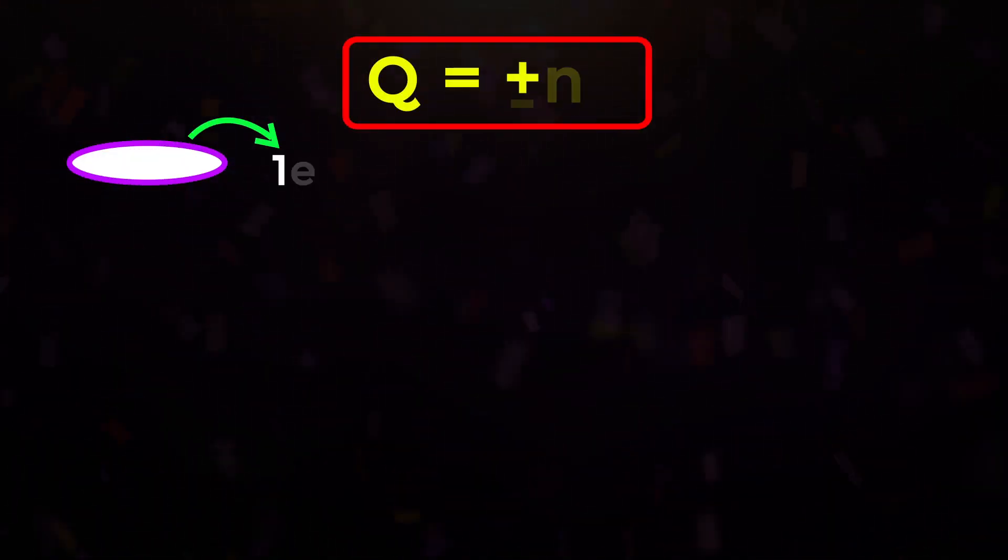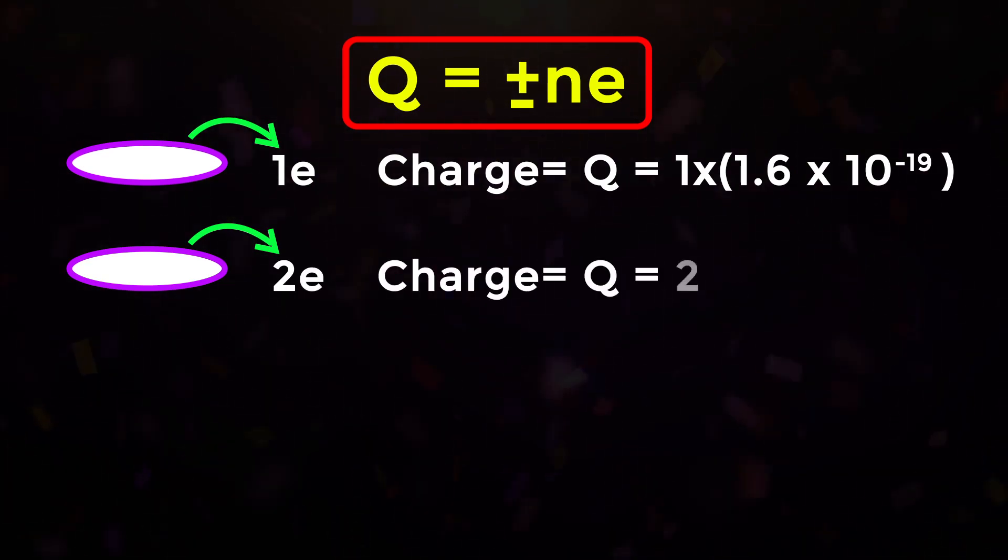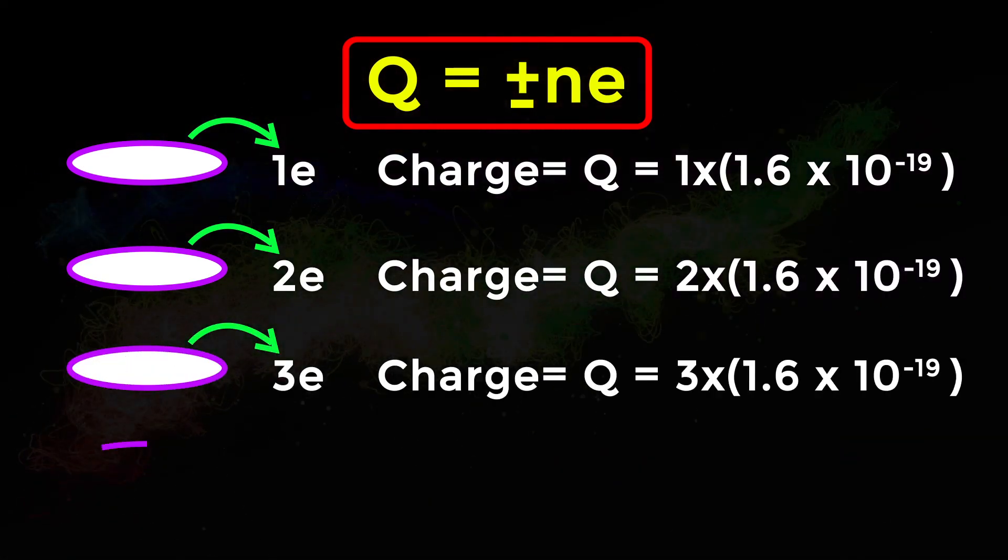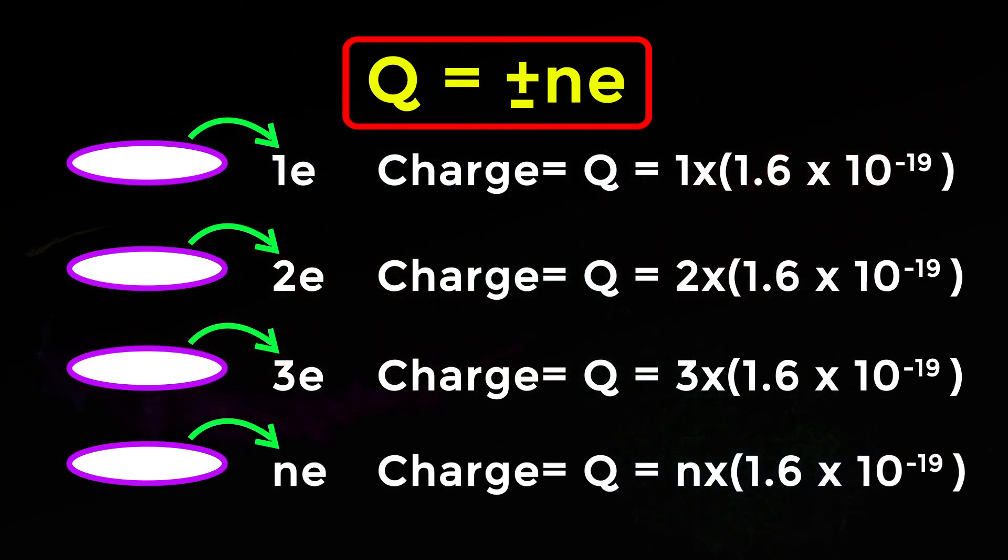Charge on a body Q is given by Q = ±ne, where n is a whole number 1, 2, 3 and so on, and e = 1.6 × 10^-19 coulomb.